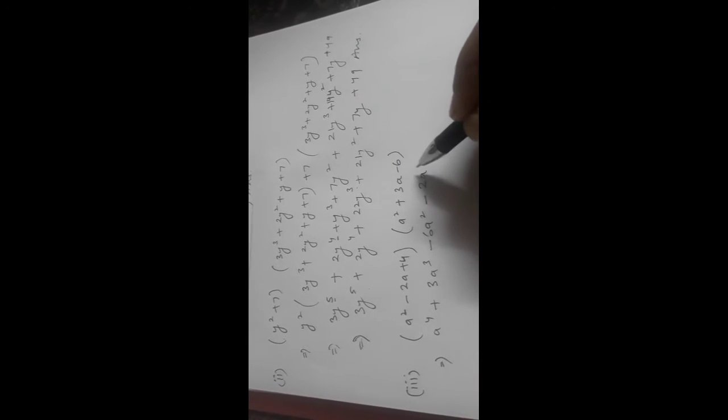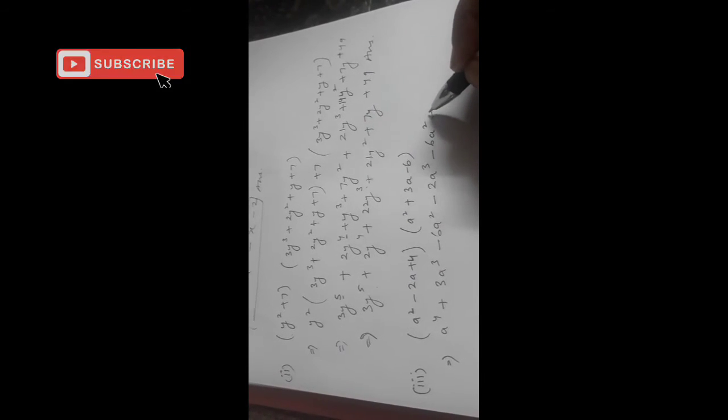Now minus 2a times a² gives minus 2a³. Minus 2a times 3a gives minus 6a². Minus 2a times minus 6 gives positive 12a. Now for 4: 4 times a² gives 4a². 4 times 3a gives 12a. 4 times minus 6 gives minus 24.